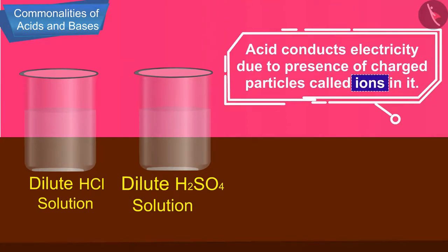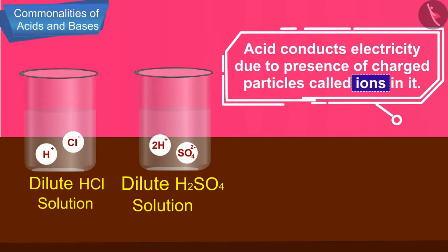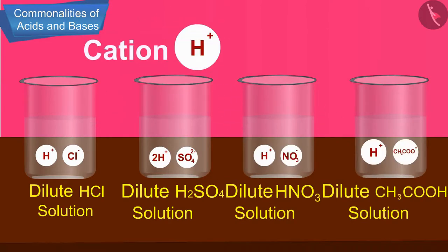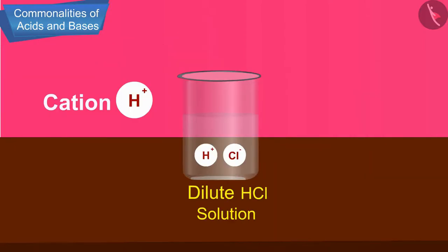The aqueous solution of an acid conducts electricity due to the presence of charged particles called ions in it. So all acids contain hydrogen ions. The hydrogen ions present in acids is such that when acid is dissolved in water, it separates out as positively charged hydrogen ions and enters the solution as H+ ions.